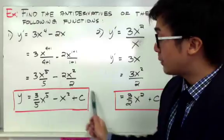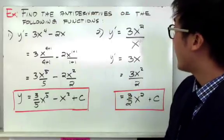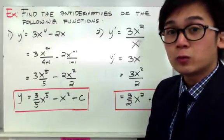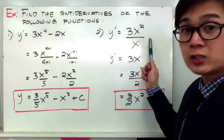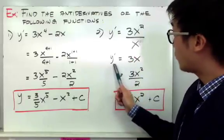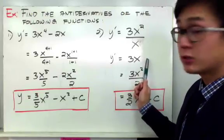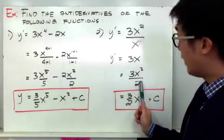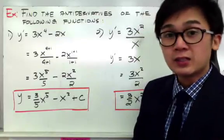Don't forget your constant, as it is a very important part of your function. For number 2, y prime is equal to 3x squared all over x. Don't get confused about the quotient rule because in antiderivatives, the quotient rule is not really going to work. To find the antiderivative of this function, you need to simplify your rational expression first. So 3x squared all over x — you can cancel the x at the bottom, giving y prime equal to 3x. Now that your expression is in simplest form, apply the antiderivative rule: add 1 to your exponent and bring it down, giving 3x squared all over 2, which simplifies to 3 over 2 times x squared plus a constant.